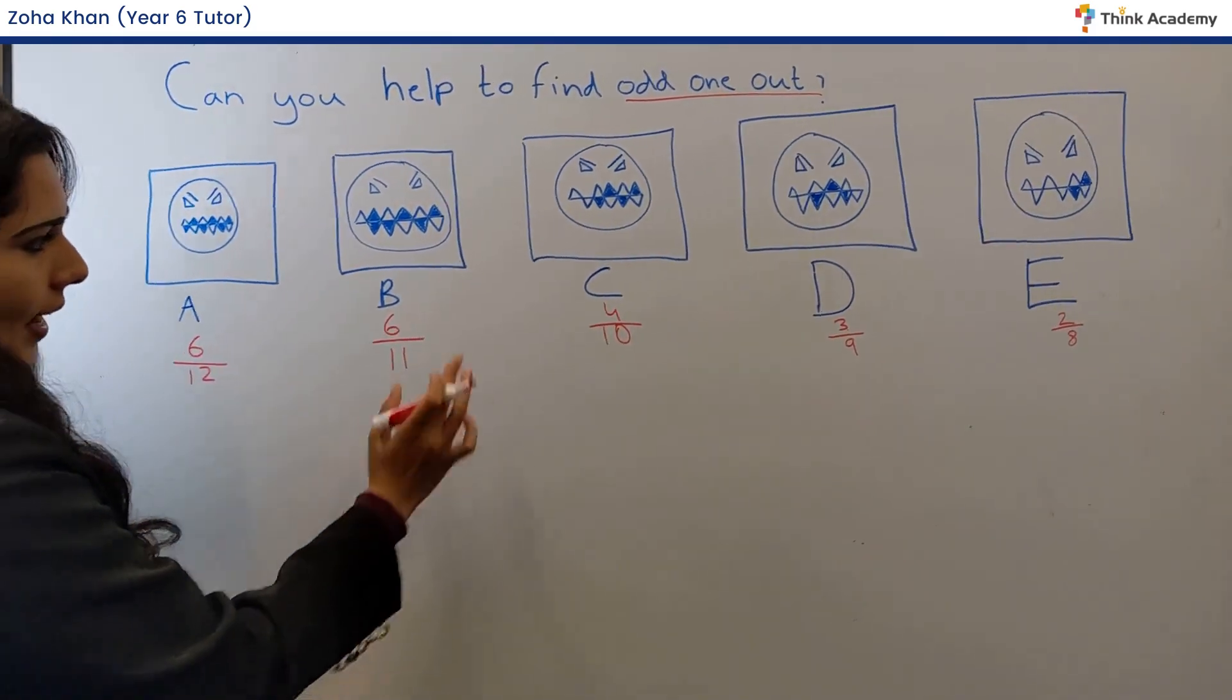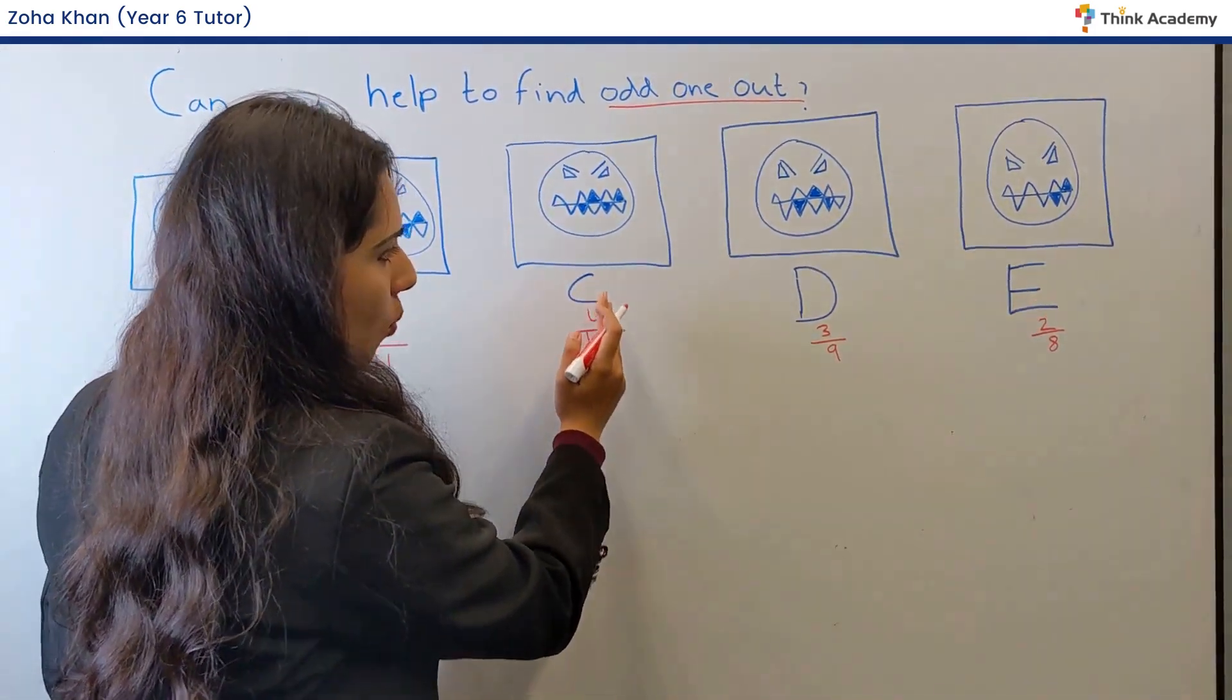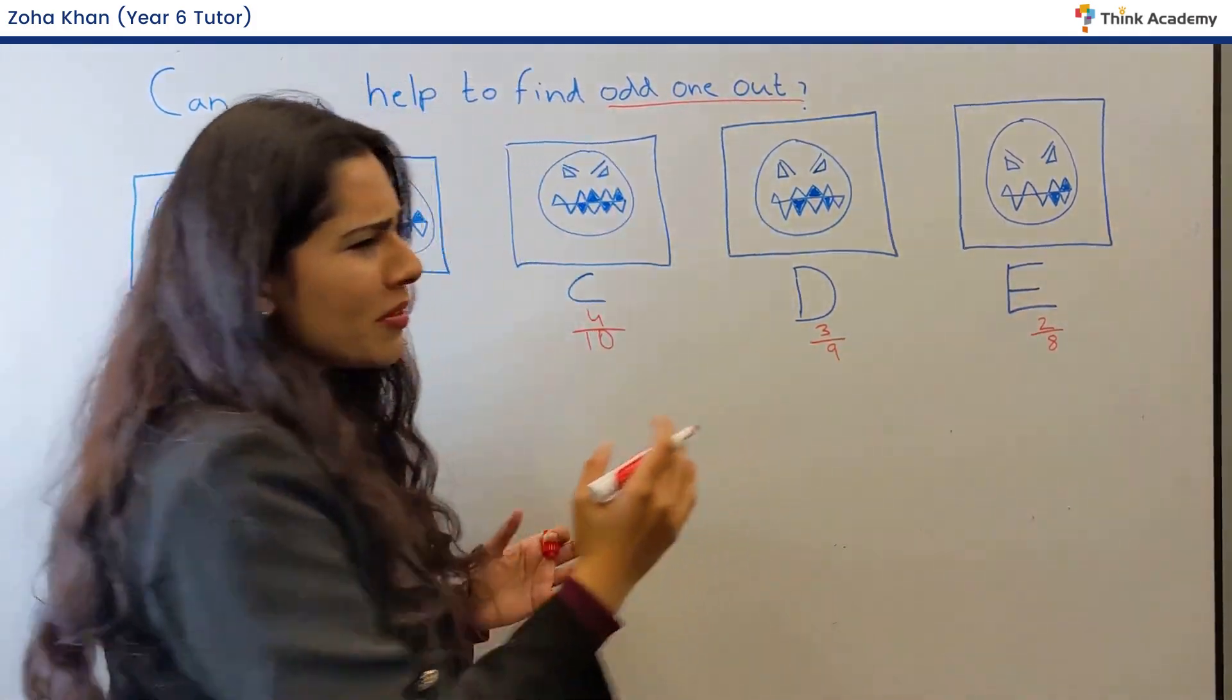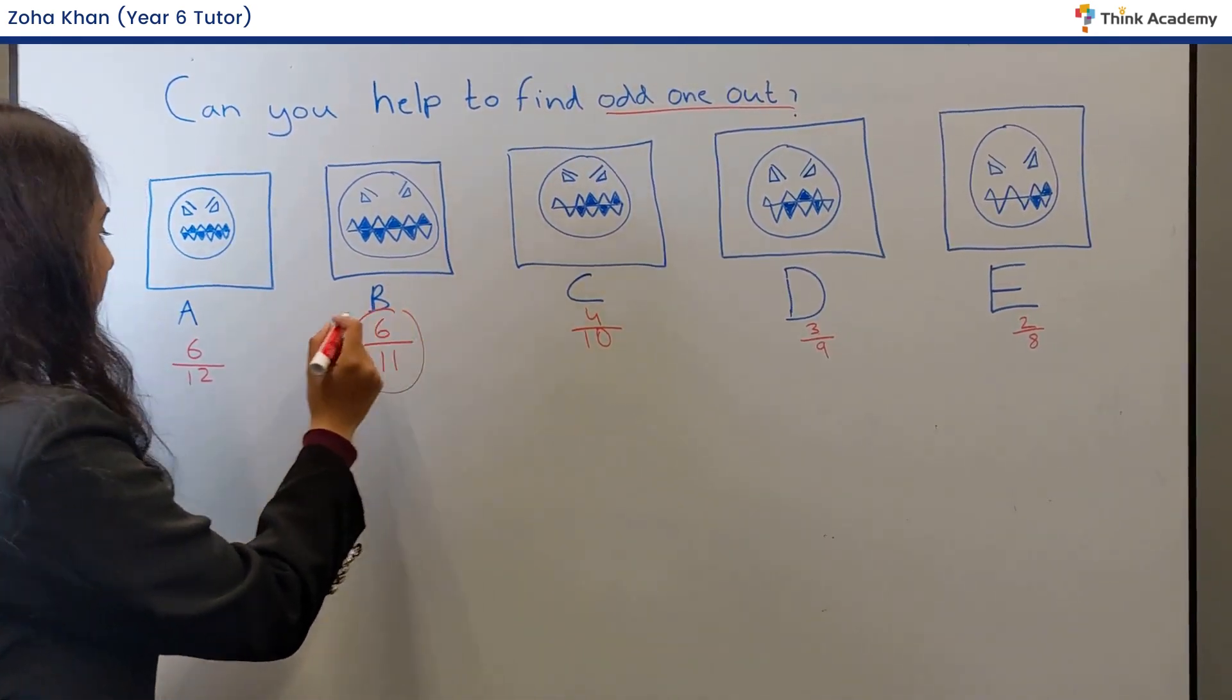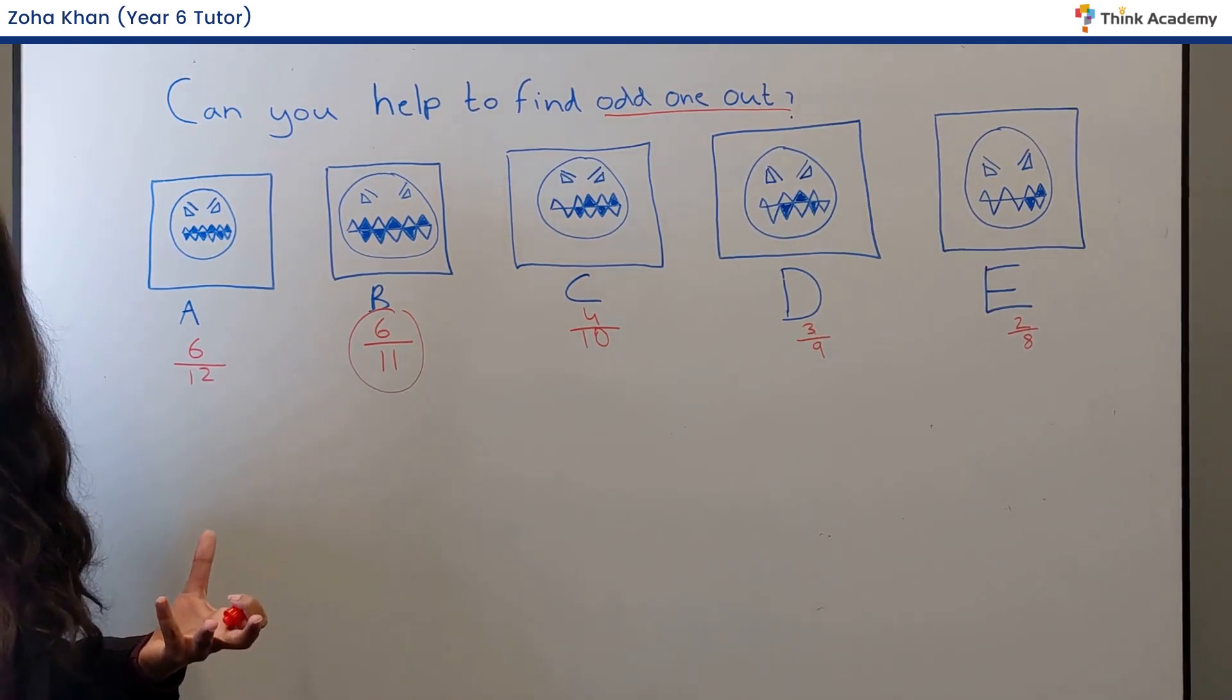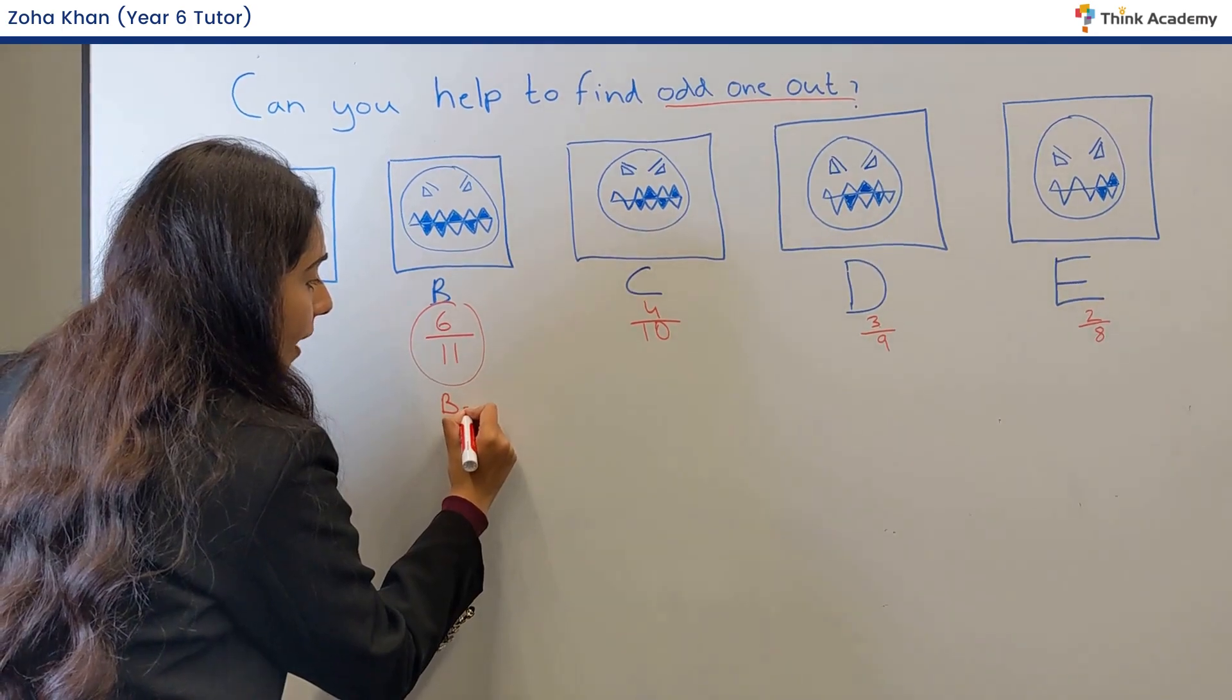Over here, let's have a look at the last three terms. We know that four decreases by one to three, three decreases by one to two. So now we should be able to see that B is the odd one out, because six doesn't decrease by one to give us five. It actually stays constant. So B is our odd one out.